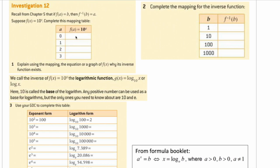So if you do 10 to the power of 0, it's going to be 1. 10 to the power of 1 is 10. 10 squared is 100. 10 cubed is 1,000.